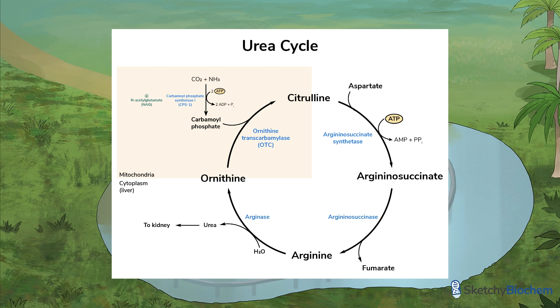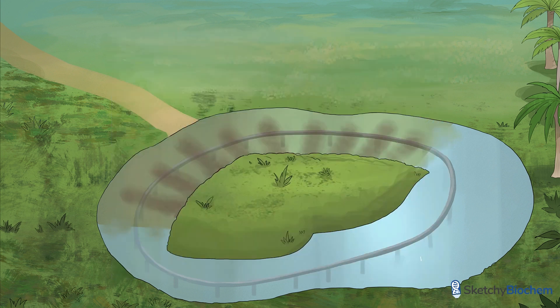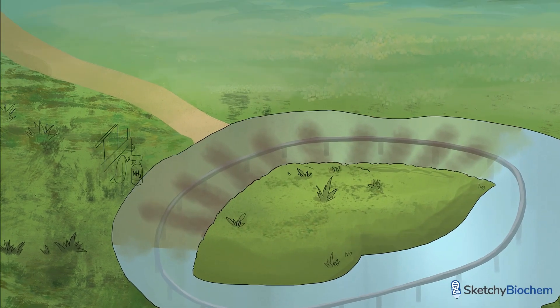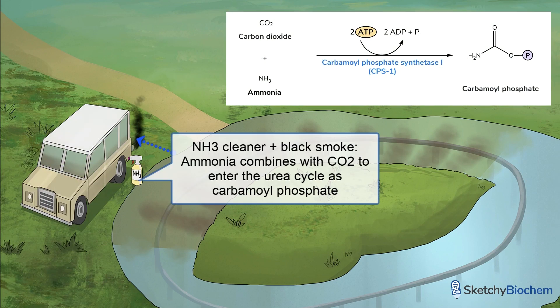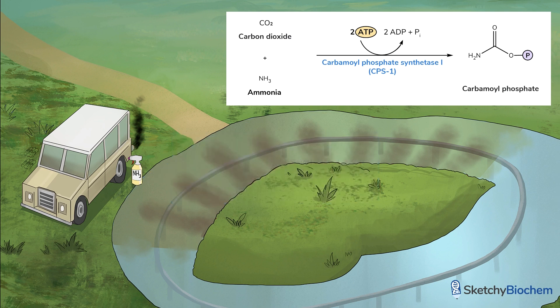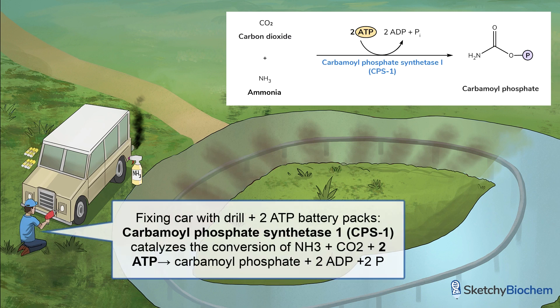The first two sections of the Jurea-Ungel River are murky and muddy with dark hues that look like mitochondria — that's because the first two steps occur in the mitochondria. This NH3 cleaner spray bottle represents ammonia, which combines with CO2, shown by the black smoke coming out of that Jeep, to make carbamoyl phosphate. The park worker using a power drill to fix the Jeep is carbamoyl phosphate synthetase-1, or CPS-1, which is the rate-limiting step in the urea cycle.